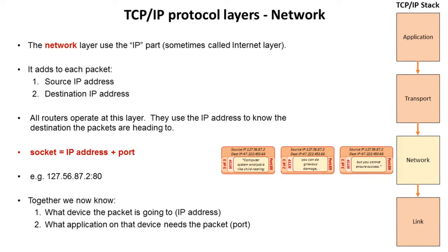The network layer uses the IP part, called the internet layer. It adds to each packet a source IP address and a destination IP address. We can see here that our data from the transport layer has been wrapped up again with additional information containing the source IP and the destination IP. All routers operate on this layer, which is sometimes thought of as layer 3, and the routers use the IP address to know where the packets are going.